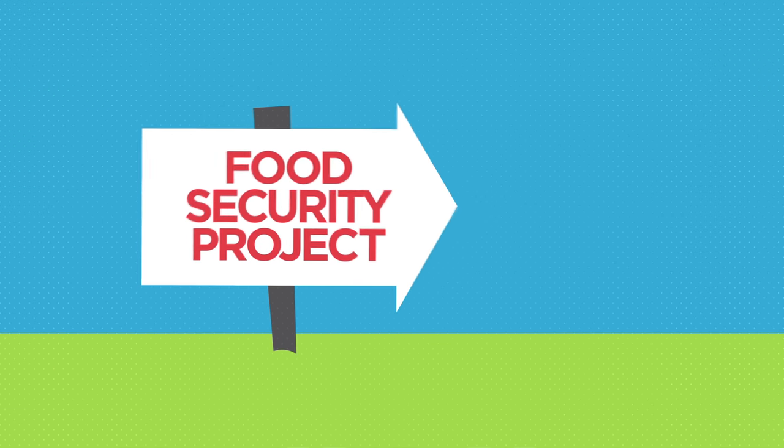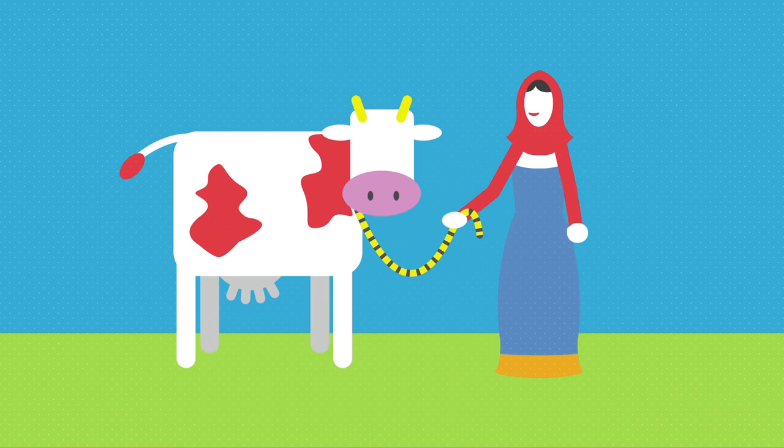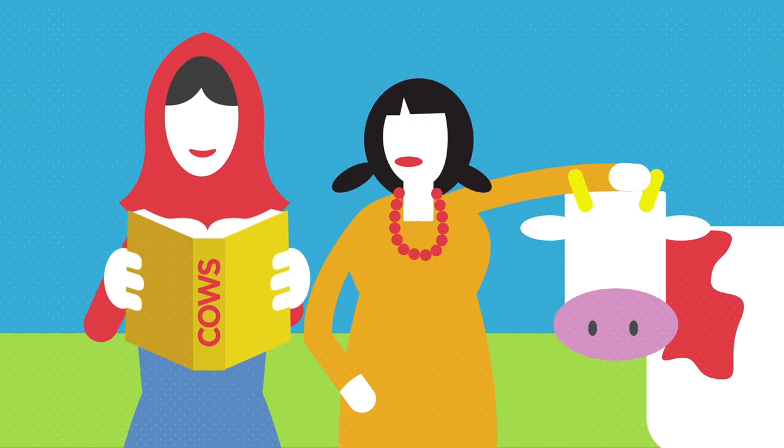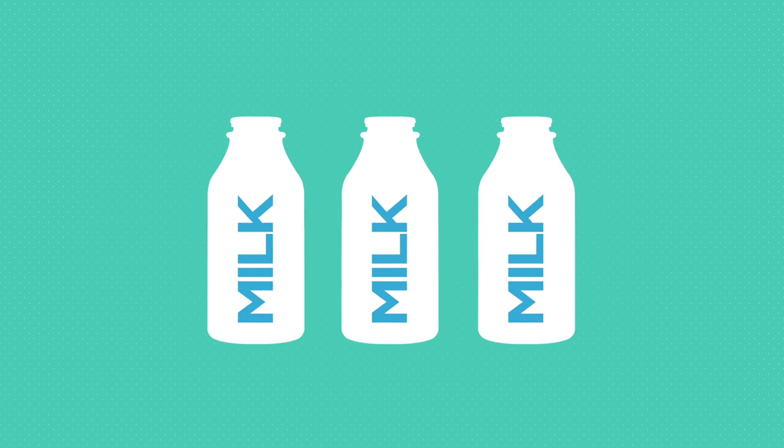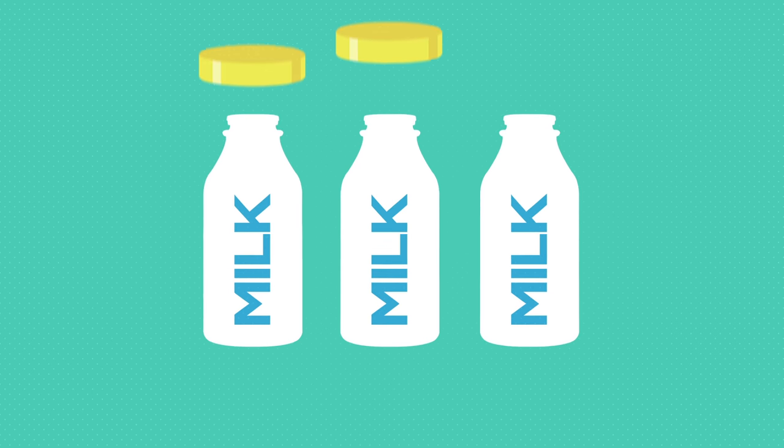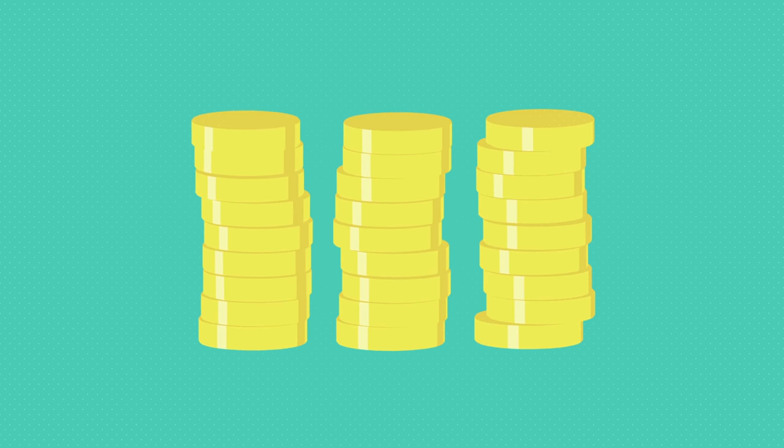Through a local food security project, she was able to buy a cow and then receive training to look after it properly. The cow's milk provides Kadaya's family with nutritious food, and she can sell some of the milk in the local market for extra income.